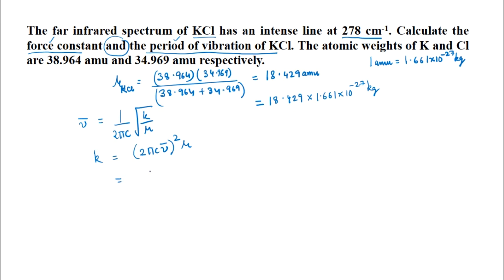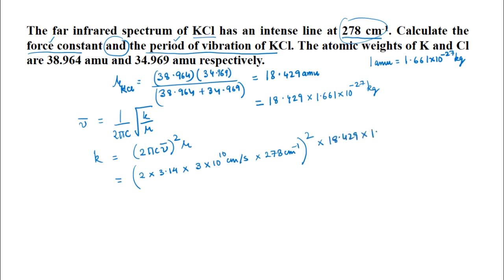Substituting the values: k = (2 × 3.14 × 3×10¹⁰ cm/s × 278 cm⁻¹)² × (18.429 × 1.661 × 10⁻²⁷ kg). Performing the calculation gives k = 83.97 N/m.